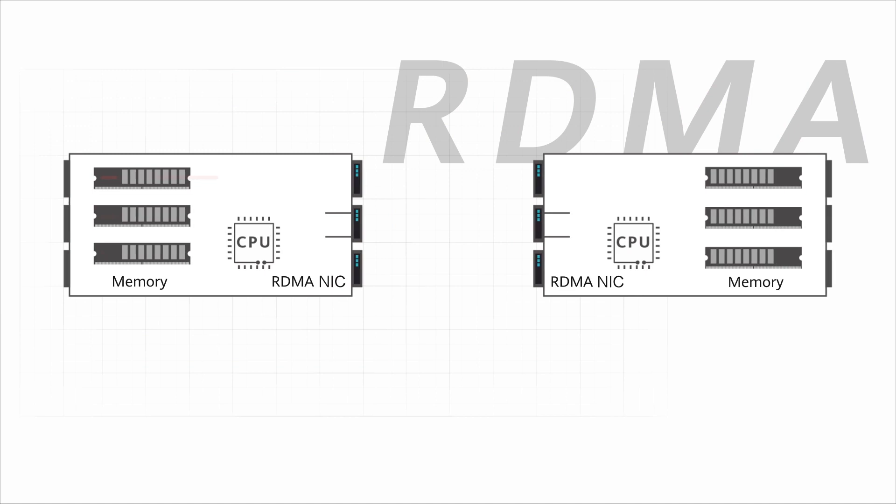In addition, RDMA allows the receiver to directly read data from the memory of the transmitter, which greatly reduces the CPU load. For these reasons, RDMA is very popular in high-performance applications.